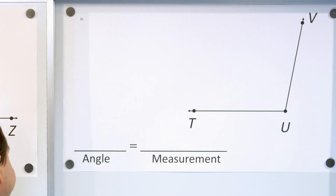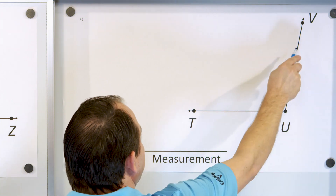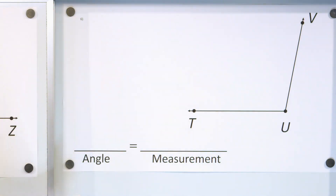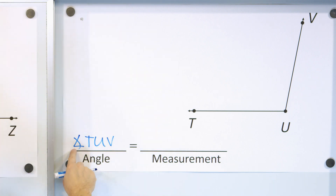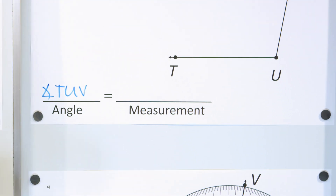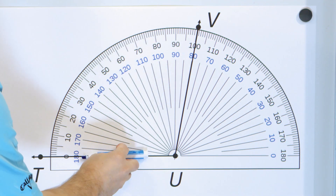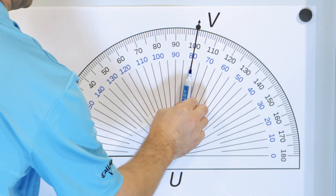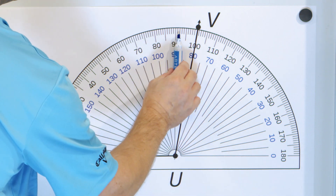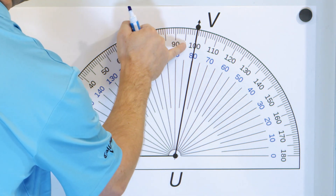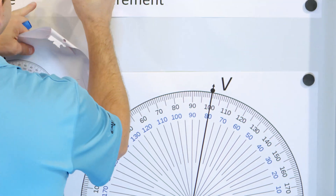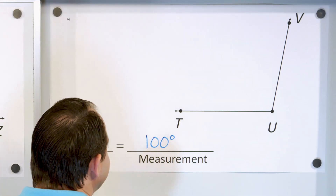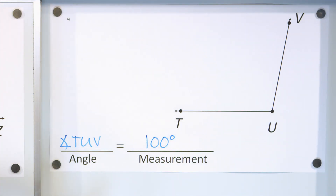Finally, we have this angle measure. We could call it TUV or VUT — either way is fine — so we'll call it angle TUV. What is the measurement? We're measuring the angle between this ray and this one. Straight up and down would be 90; this is bigger than 90 because it's more open. So we choose between 100 or 80, and it has to be bigger than 90, so the angle measure is 100 degrees — which is slightly bigger than 90 degrees.